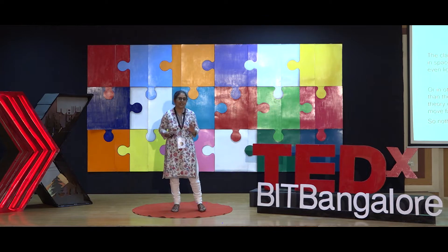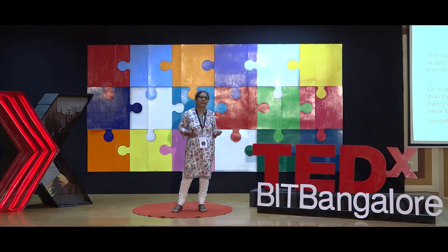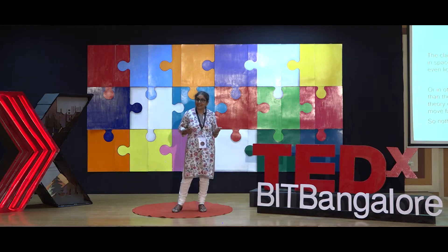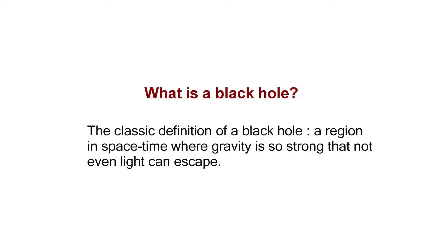Before I start, let me take you back a step and describe what a black hole is. The definition you'll see all over the internet is: a black hole is a place in space-time where no light can escape. It's so compact and so massive that light cannot escape.